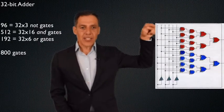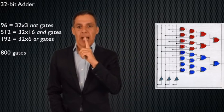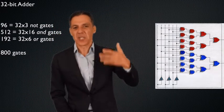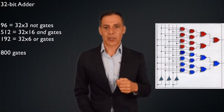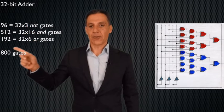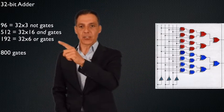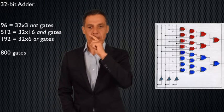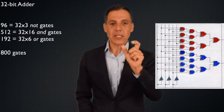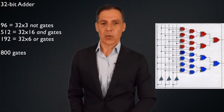This is the circuitry for a 1-bit adder — and as I mentioned last lecture, that's a lot of gates for something so simple. Let me run through a quick back-of-the-envelope calculation. To build a 32-bit adder representing reasonably large numbers, I'd need 96 NOT gates, 512 AND gates, and 192 OR gates. That's because the 1-bit adder has 3 NOT gates, 16 AND gates, and 6 OR gates — multiplied by 32. So I need 800 gates just to do addition — not multiplication or division, only addition.